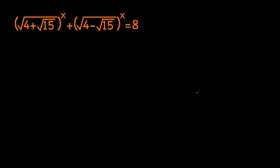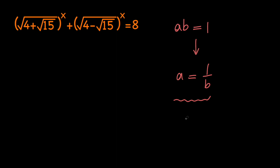First of all, notice that whenever we have a product of two numbers a and b and the product equals 1, we can divide both sides by b to get a equals 1 over b, which means those two numbers are reciprocals. Now if we raise both sides to the power of x, we get a to the x equals 1 over b to the x — meaning if a and b are reciprocals, then a to the x and b to the x are reciprocals as well.